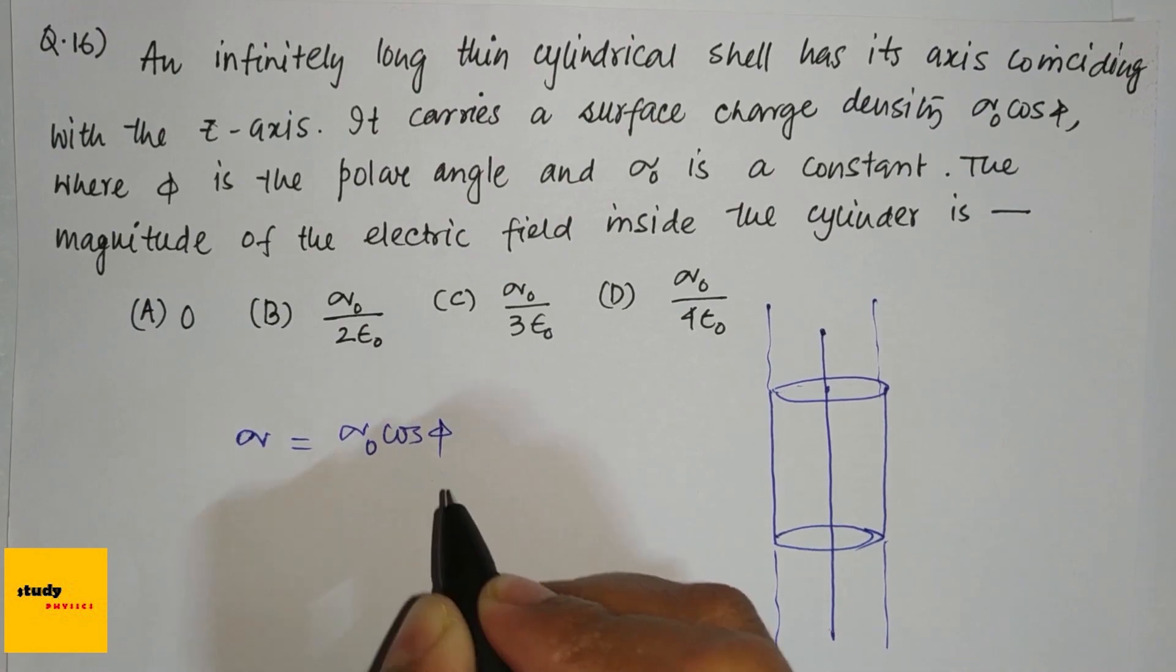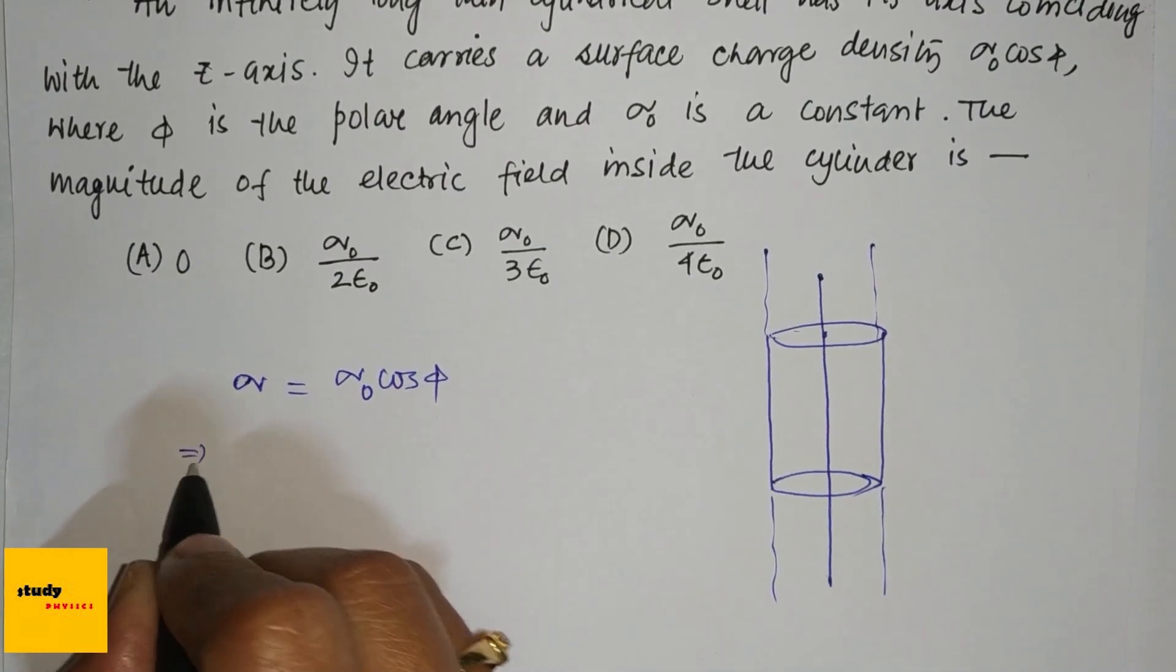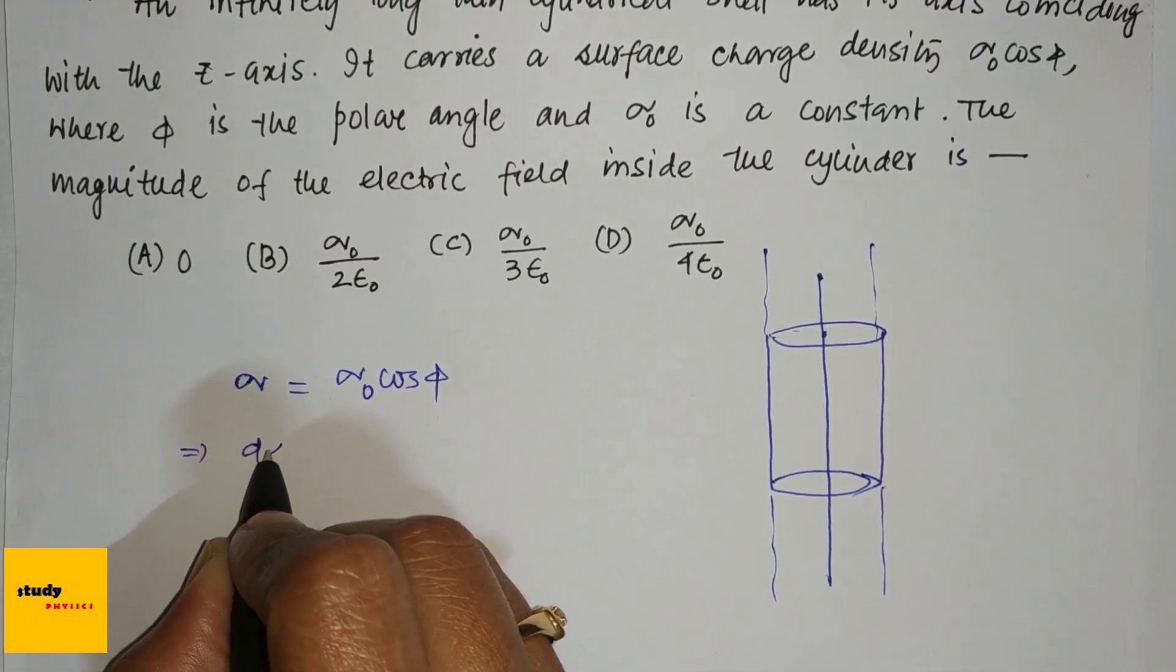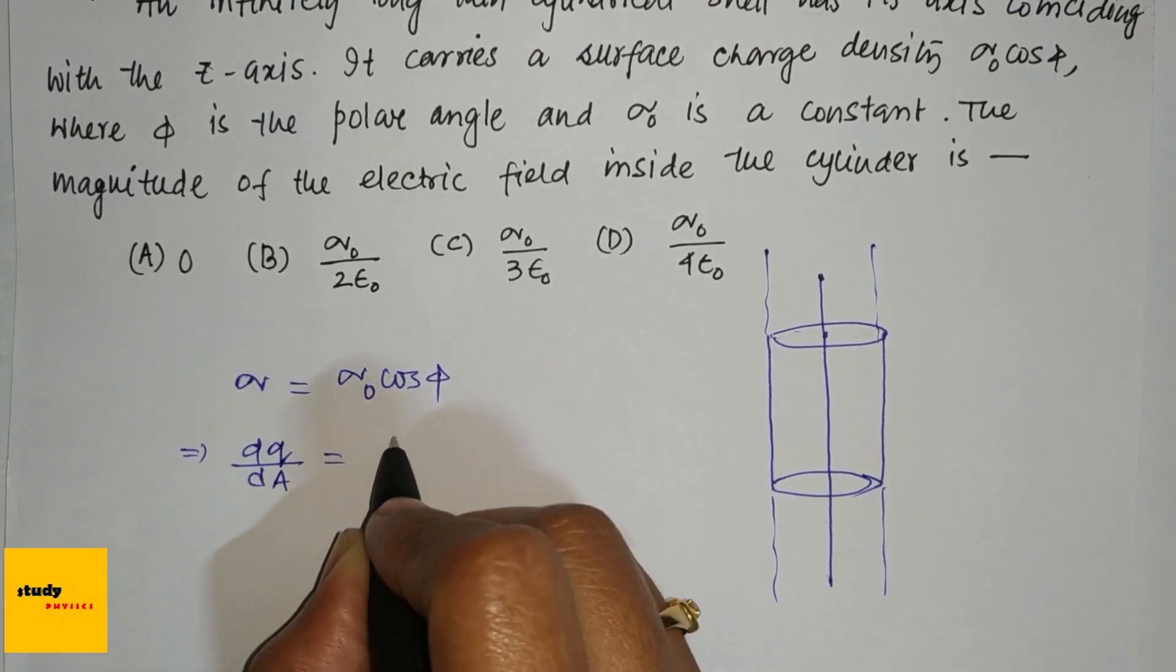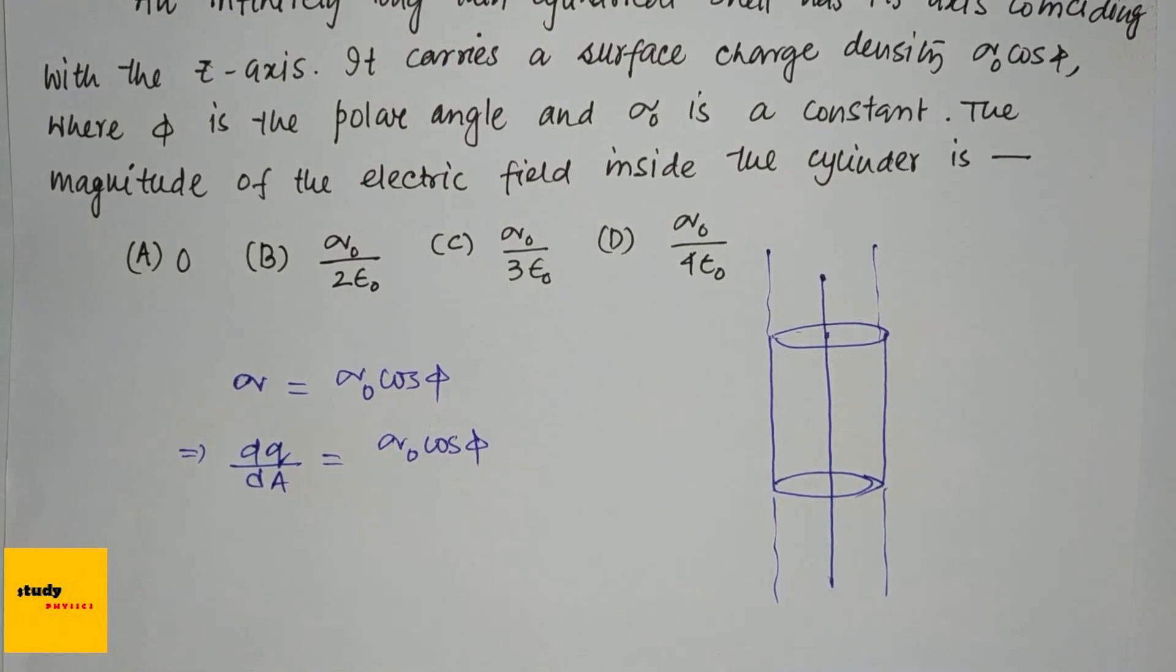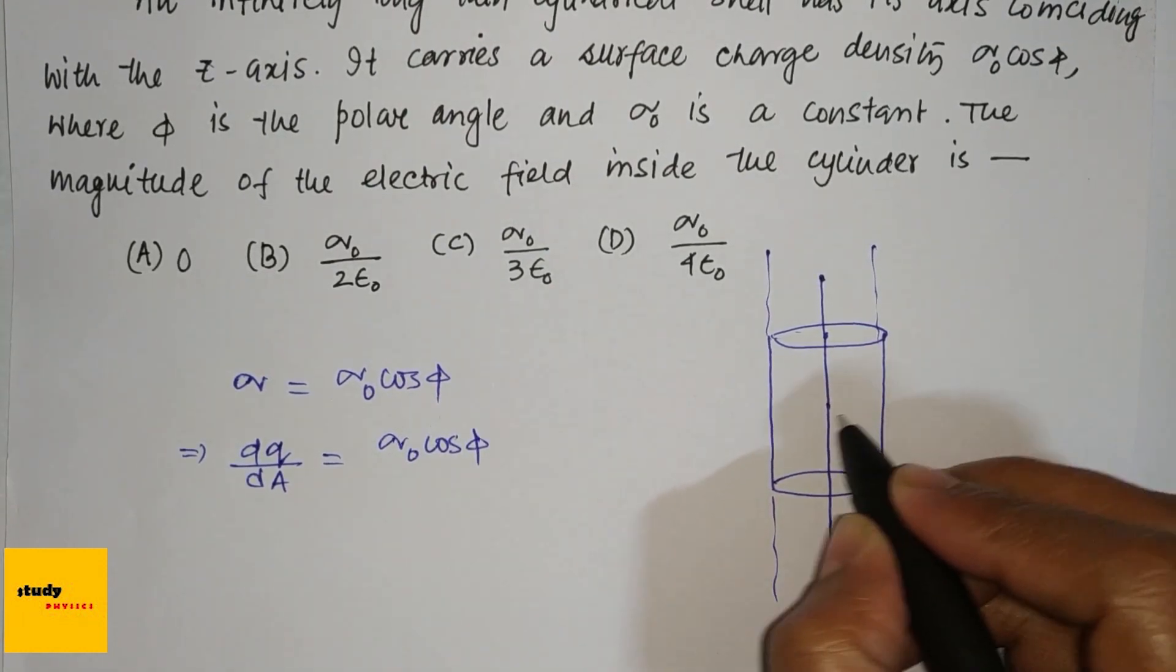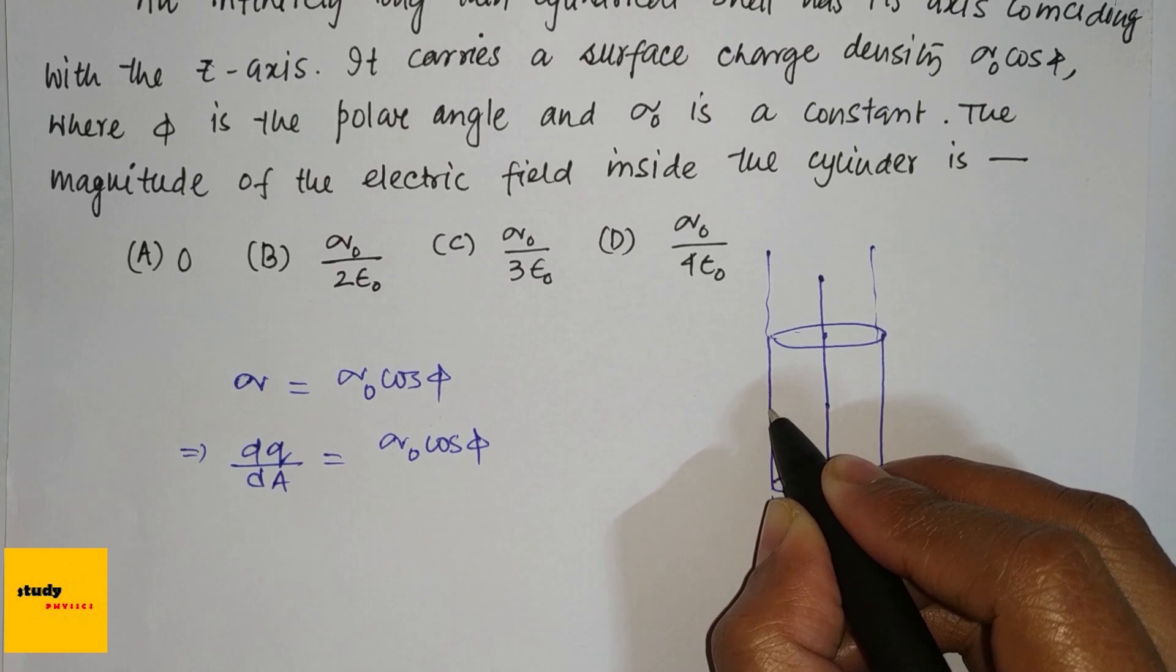And we know sigma equals dq/da, which is area, equals sigma_0 cos(phi). Okay, so let's take a ring.